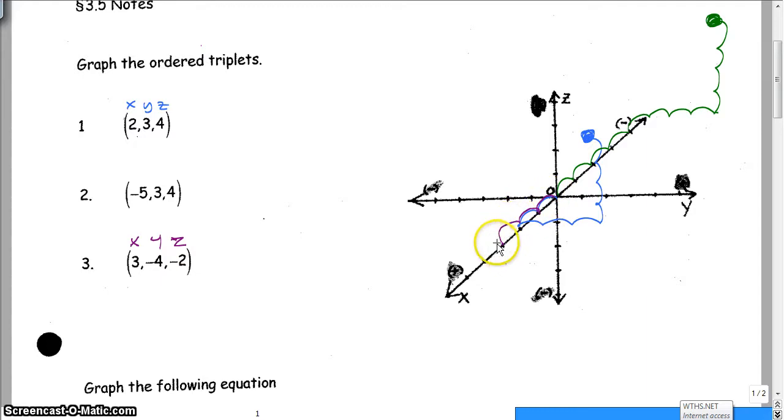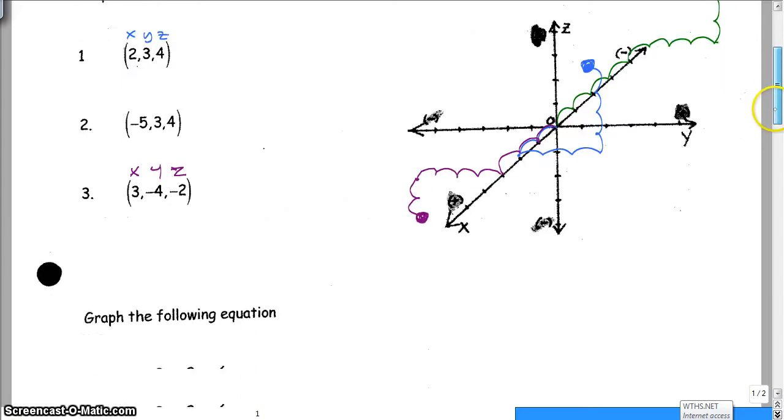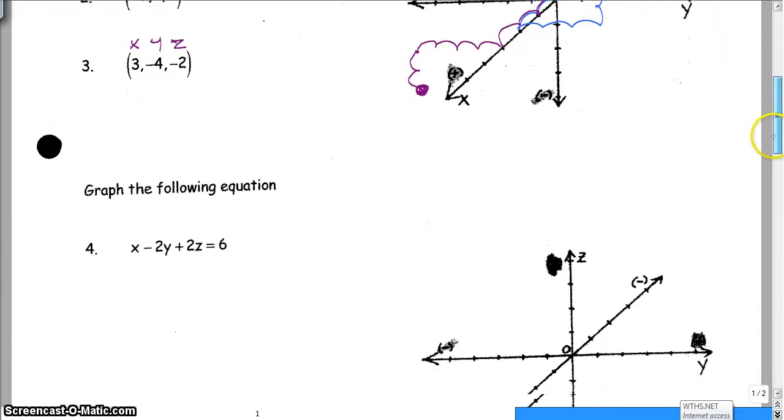And then you'll go 1, 2, 3, 4 out, because it's a negative. And then you'll go 1, 2 down, because it's another negative. And then you'll put a dot. So that's graphing a coordinate. Now, like I said before, this is supposed to be like 3 dimensions, so it's kind of difficult to do that. So here we go.